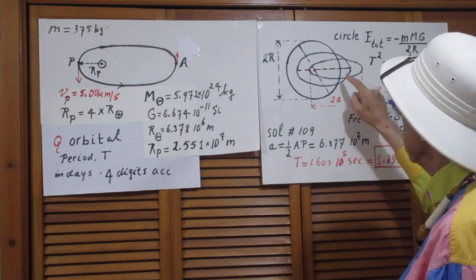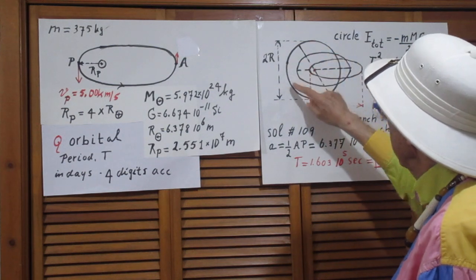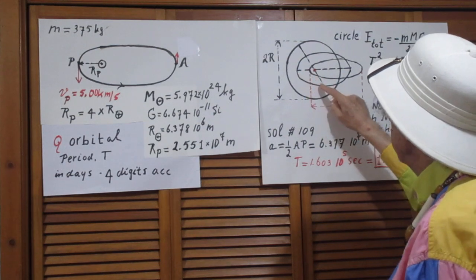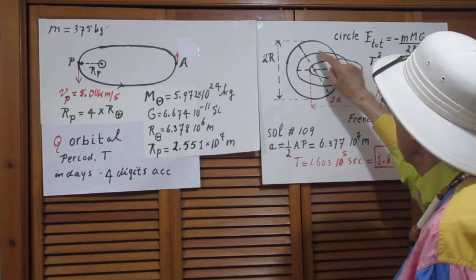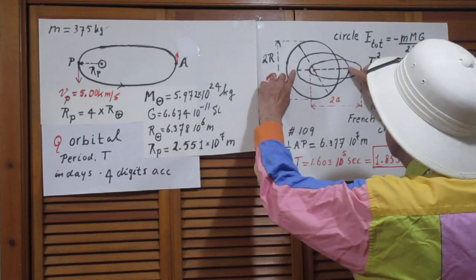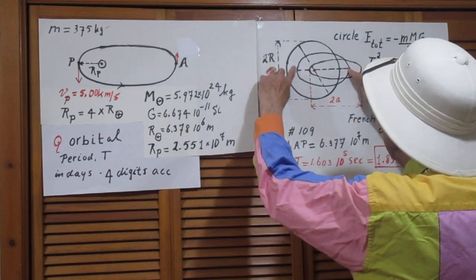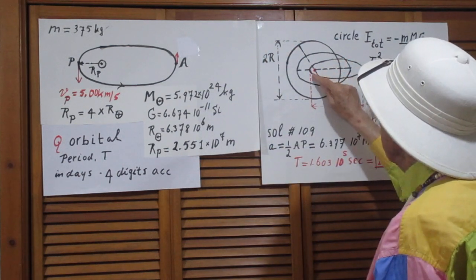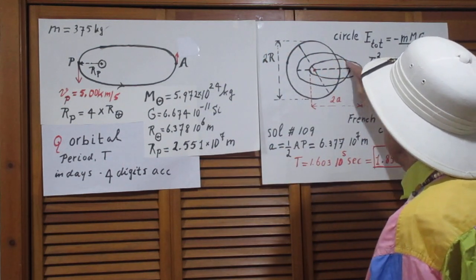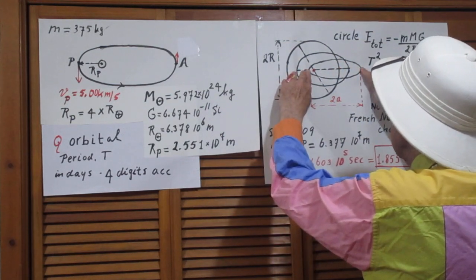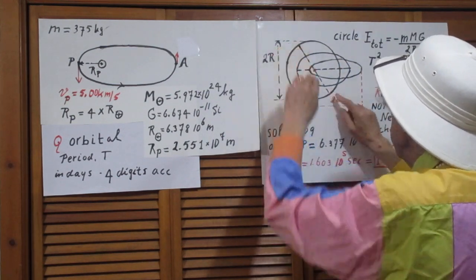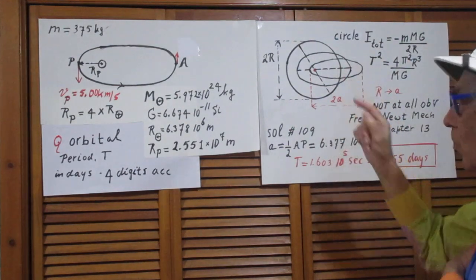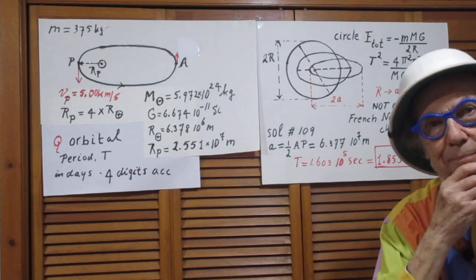What that means is that this orbital period is the same as this orbital period. Because you should notice that this distance here is the same as this distance here. And the same is true for this elliptical orbit because this distance here is the same as this distance here. I have carefully measured that. That is not at all intuitive, but it is true.